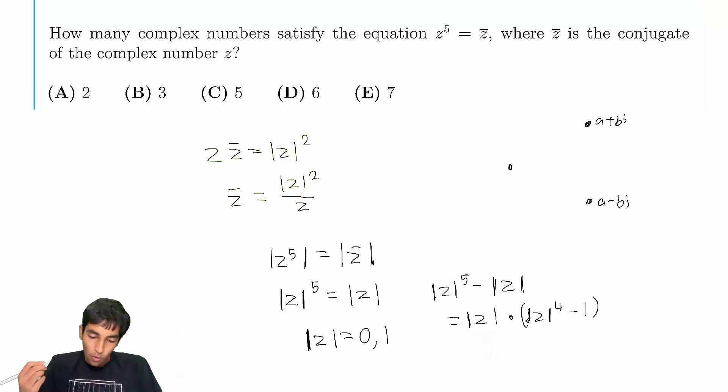And if it's 0, well, that's definitely one possibility. Magnitude being 0 gives us one solution, 0.